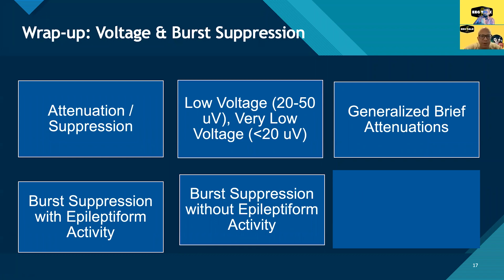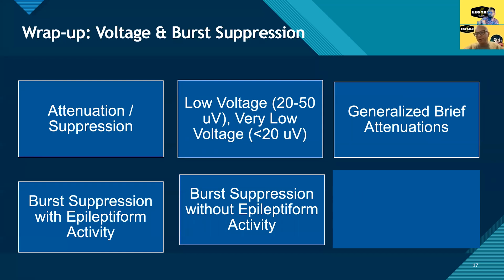To wrap up: attenuation and suppression refer to intermittent flattening of the EEG. If the voltage drops to less than 10 microvolts, we call it suppression; if it decreases by at least 50% relative to the preceding background but stays above 10 microvolts, we call it attenuation. For overall amplitude regardless of burst suppression — low voltage is 20–50 microvolts and very low voltage is less than 20 microvolts. Brief periods of EEG flattening that don't meet burst criteria are called intermittent brief attenuations or generalized attenuations.